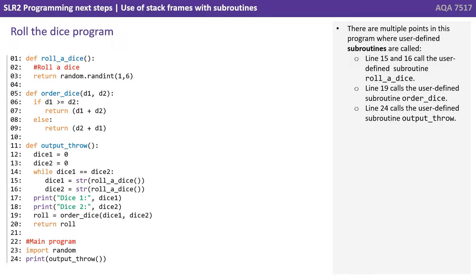There are multiple points in this program where user defined subroutines are called. Lines 15 and 16 call the user defined subroutine Roll a Dice. Line 19 calls the user defined subroutine Order Dice. Line 24 calls Output Throw.